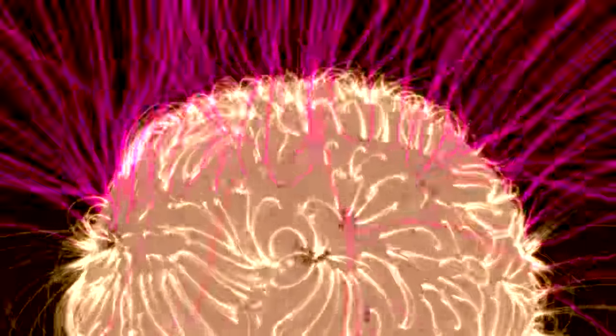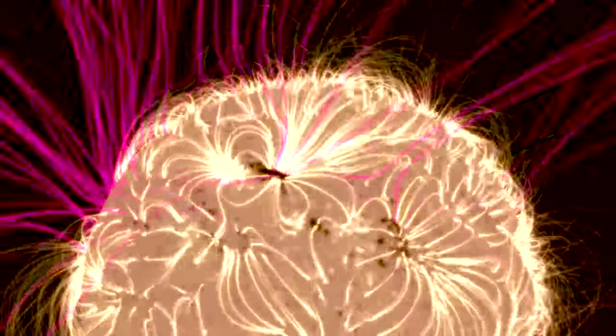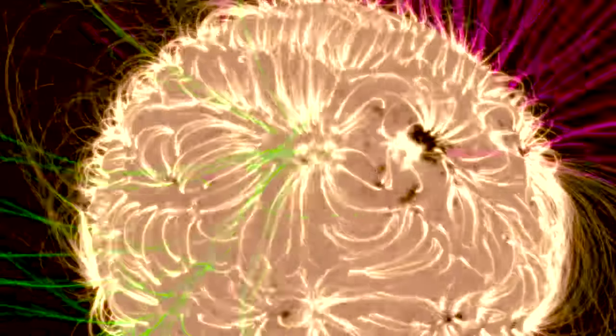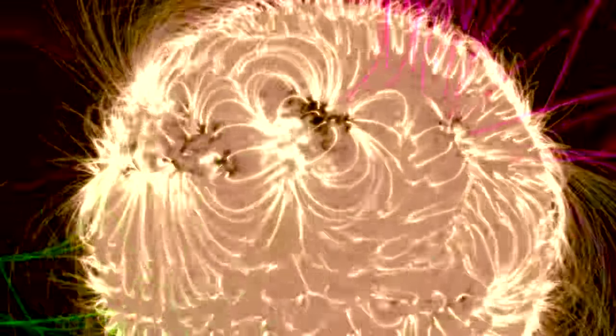And again, models are the one way we can do this because they allow us to model where the field lines are, how they're going to interact with each other when the sun rotates, and then how that causes solar storms like coronal mass ejections and solar flares.